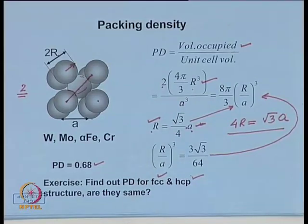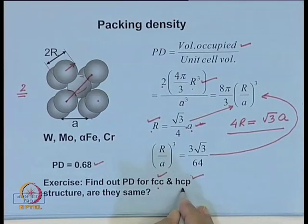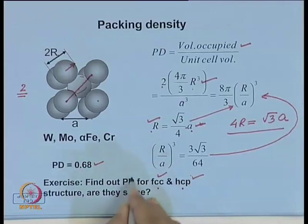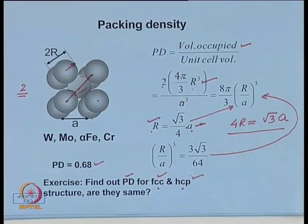You can also find the packing density for face-centered cubic and hexagonal close-packed structures. In the last class we talked about the layer-type arrangements, and you may find a similarity between FCC and HCP — possibly you will find that the packing density is the same for both. Please go through this calculation yourself.